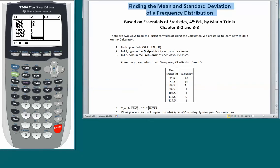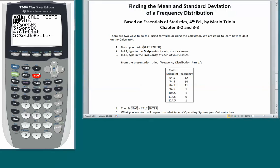Our next step is to hit STAT. We're going to arrow over to CALC and hit ENTER. So I hit the STAT key. I'm going to arrow over to CALC, and it's right where I want it to be, so I'm just going to go ahead and hit ENTER.